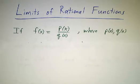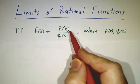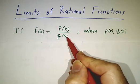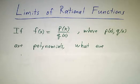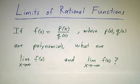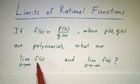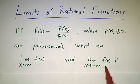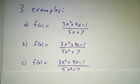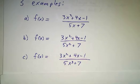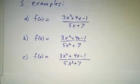Remember that a rational function is a ratio of two polynomials — p is a polynomial, q is a polynomial, and we look at their ratio. So if you have a rational function, what's the limit as x goes to infinity? What's the limit as x goes to minus infinity? We're going to work three examples to give you a sense of what's going on. If you know these three examples, you can handle any rational function.